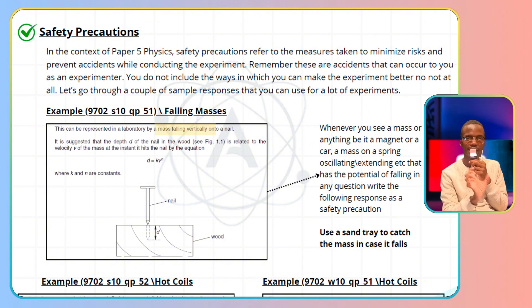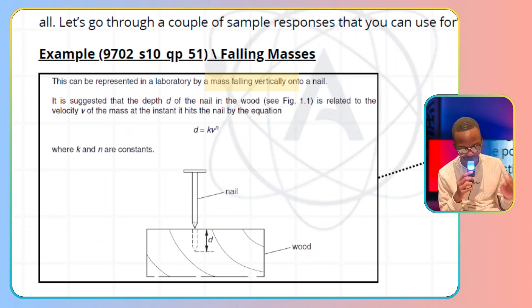then I'll give you a premise, a scenario. When you see something similar, you'll know the kind of response to give. The first example is from May/June 2010 question paper 5-1: falling masses.